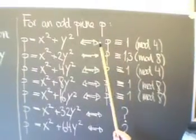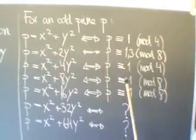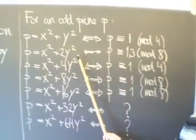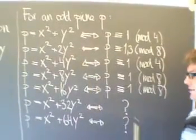For an odd prime p, the following congruence conditions for the representation of p by certain quadratic forms are classical.